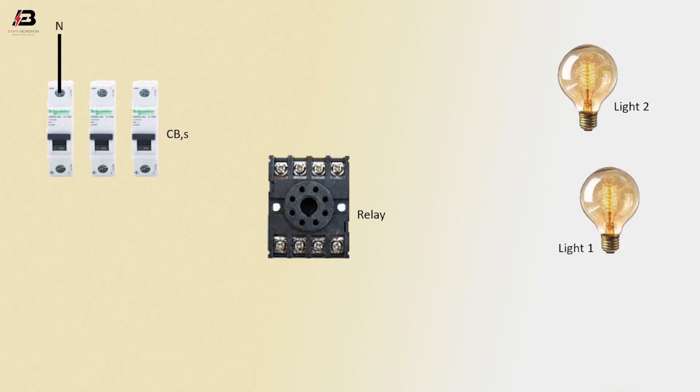Phase connection to circuit breaker. Phase connection from circuit breaker to another circuit breaker. Phase connection output from circuit breaker to connect relay. Phase connection from circuit breaker to connect relay A2 point. Phase connection from relay.